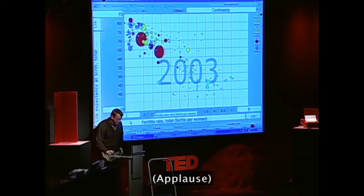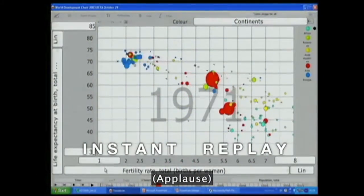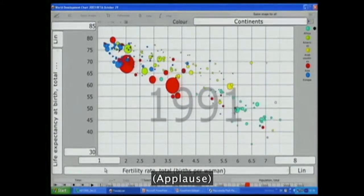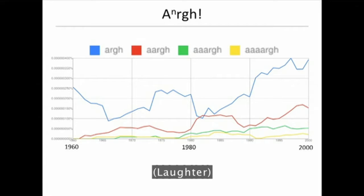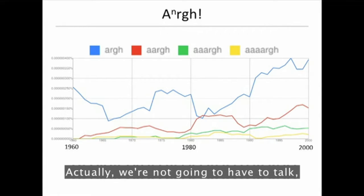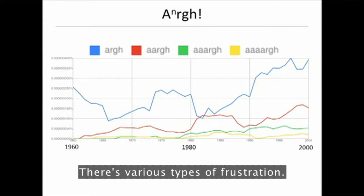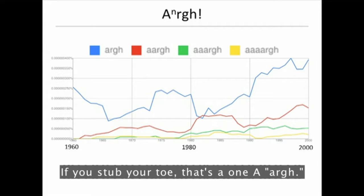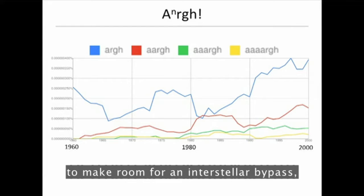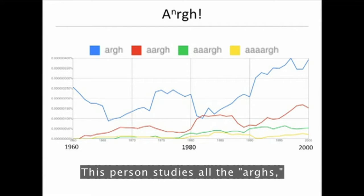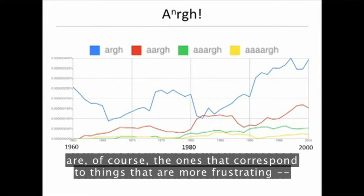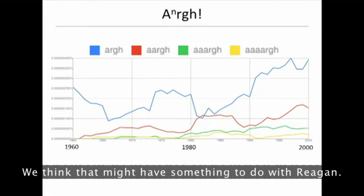And we have a completely new world. This person was interested in the history of frustration. There are various types of frustration — if you stub your toe, that's a 1a arg. If the planet Earth is annihilated by the Vogons to make room for an interstellar bypass, that's an 8a arg. This person studied all the args from 1 through 8a, and it turns out that the less frequent args are, of course, the ones that correspond to things that are more frustrating — except oddly in the early 80s. We think that might have something to do with Reagan.